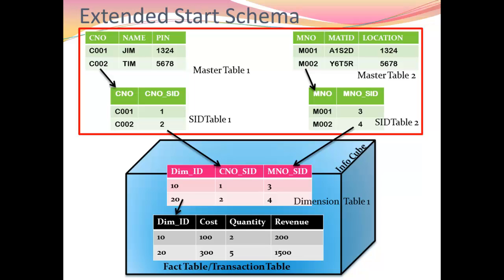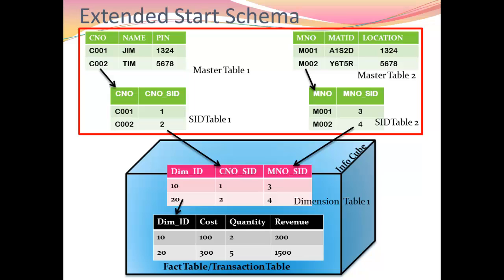For the third disadvantage — being limited to only 16 dimensions for analysis — SAP introduced dimension tables. When a cube is created, we specify the dimensions, and every dimension table will have one dimension ID field which is stored in the fact table. The maximum number of dimension IDs we can store is 16, since any table can have a maximum of 16 key fields.